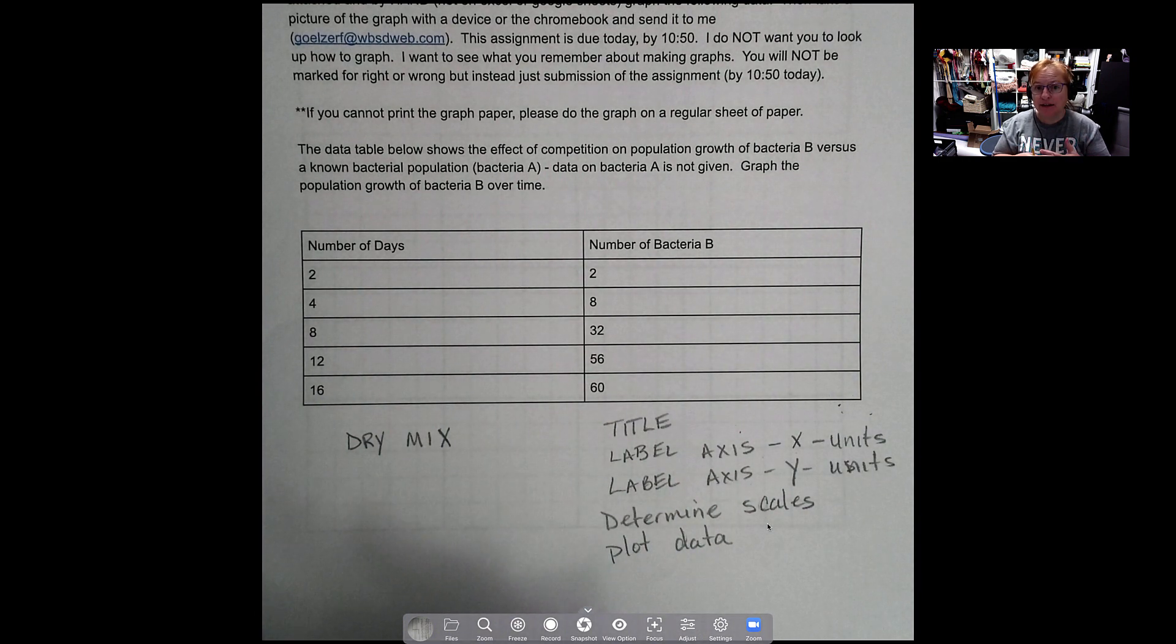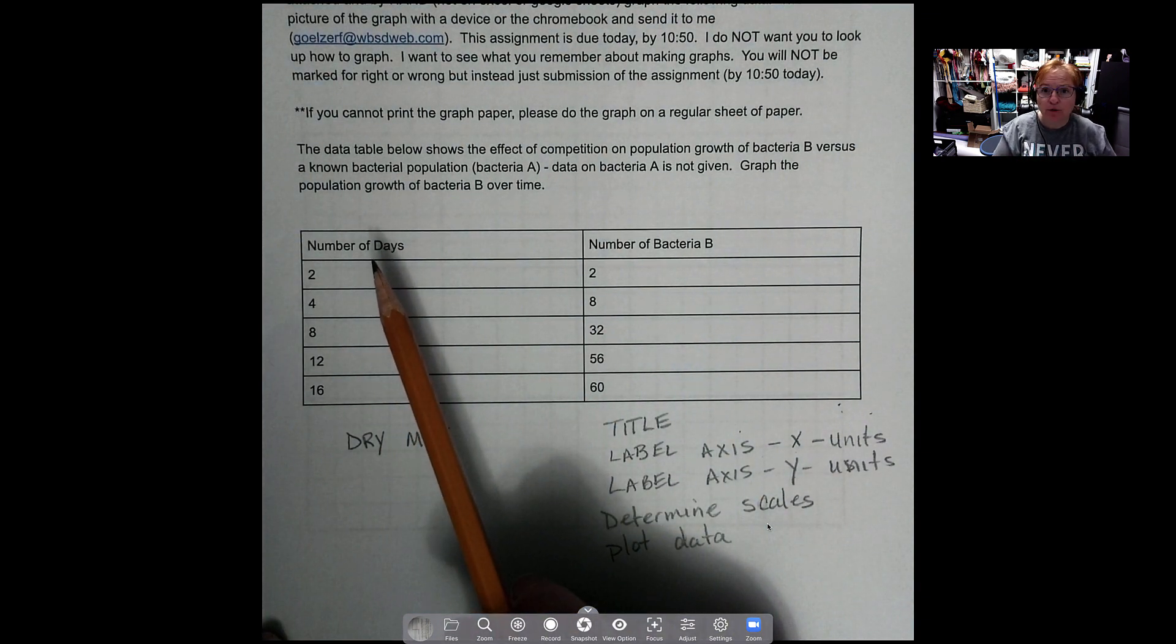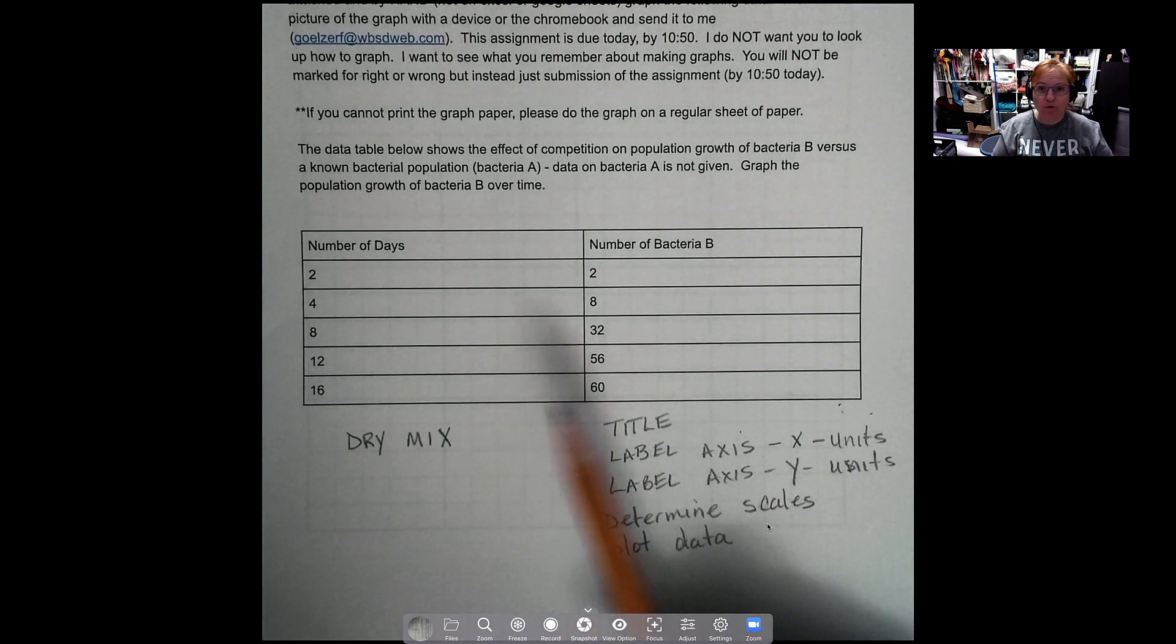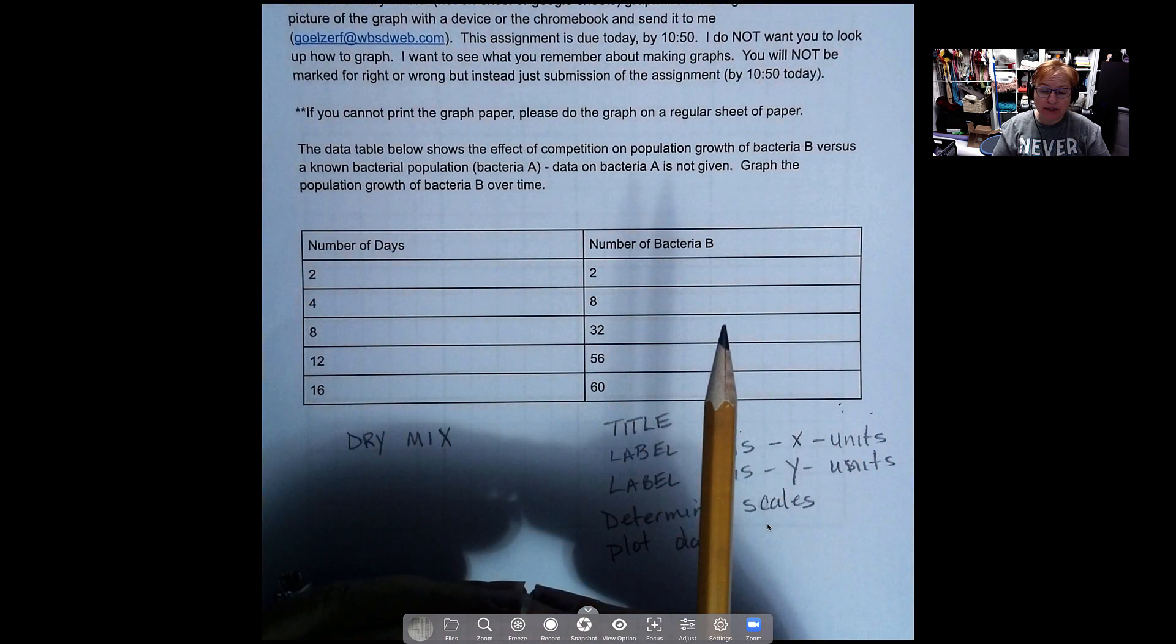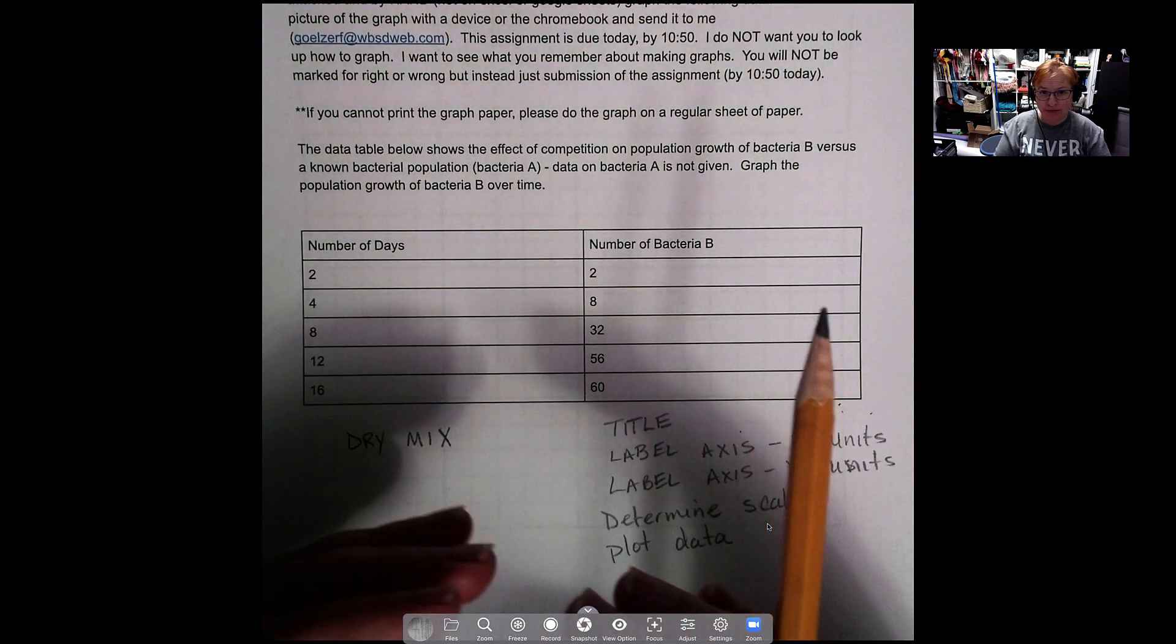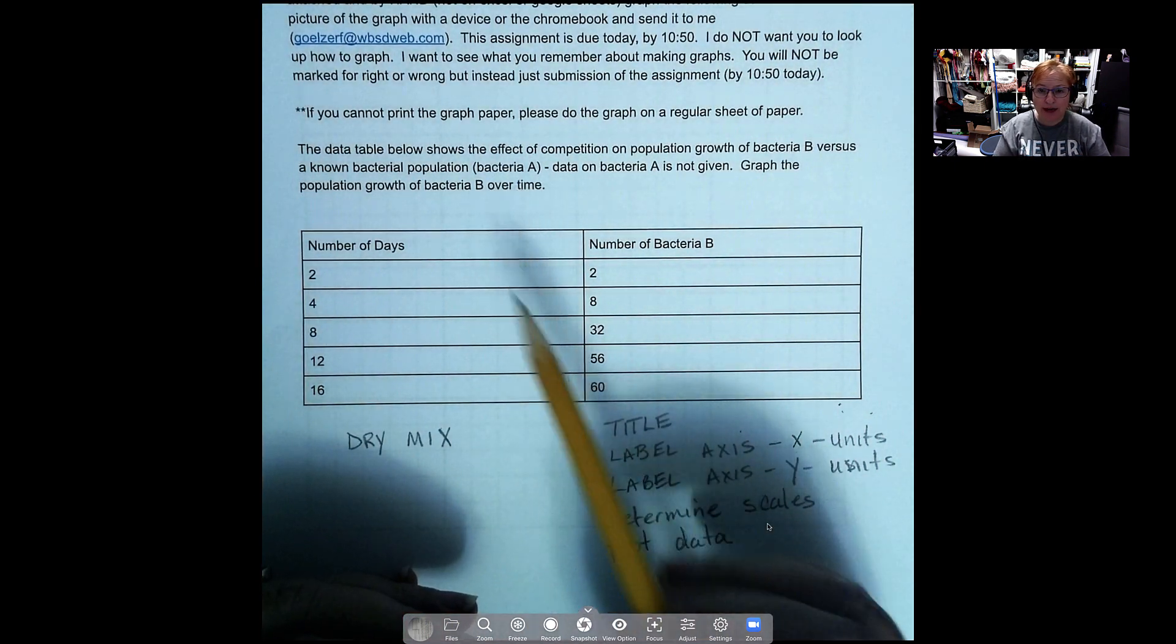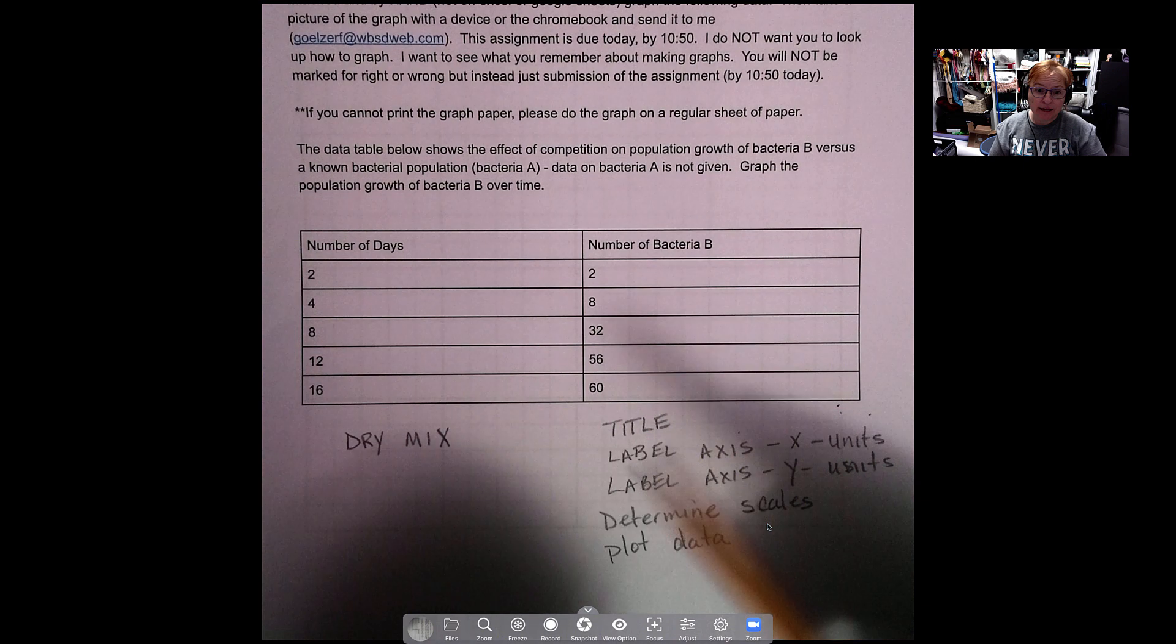So we're going to do a line graph here, and as you will recall from the Nearpod, we use the line graph when we show that the data is connected to each other, that what you have recorded in a data table, that they are related. So here we have data which is the number of days, and then we also have this data which is the number of bacteria. So the whole scenario here was that someone made these little petri dishes and they put different like they had several and they had a control.